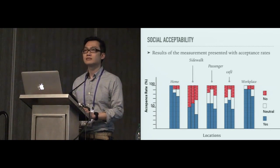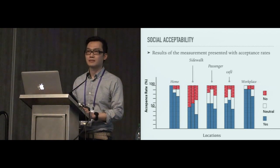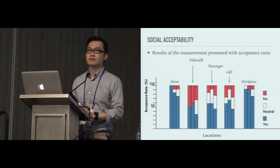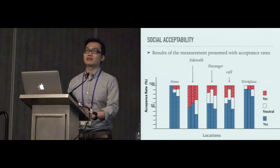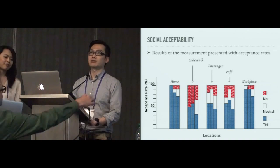One more. Sure, it's sort of a follow-up on that. So you're defining social acceptability by how the user perceives their willingness to use it in public. How about bystander perception? Yeah, we're aware that the social acceptability should be considered two parties, but unfortunately we didn't include that part in our study, but we are aware that that is included in our paper. Thank you.